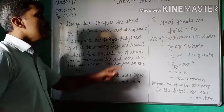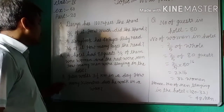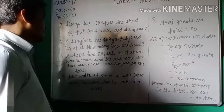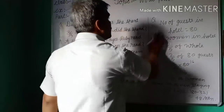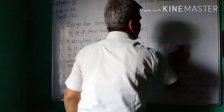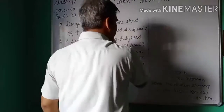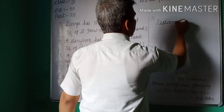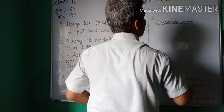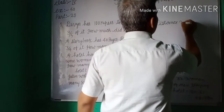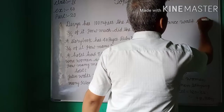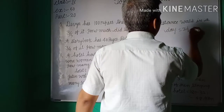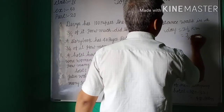Now the last question: Jatin walks 3 and 1 by 2 kilometers in a day. How many kilometers does he walk in a week? At first, distance walked in a day is 3 and 1 by 2 kilometers, that means 7 by 2 kilometers.